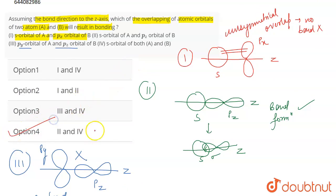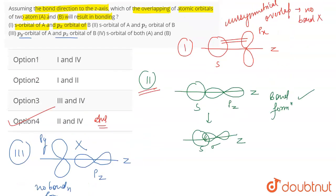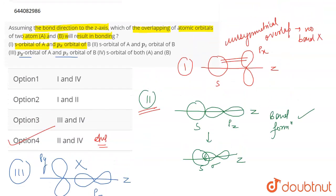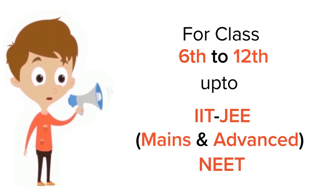So the s-s overlap and the s-pz overlap are the only cases where bond formation can occur. The correct answer is the second and fourth cases: in the second case, bond formation took place between the pz and s orbital, and in the fourth case, both s orbitals were combining. The correct answer for this question is option four.